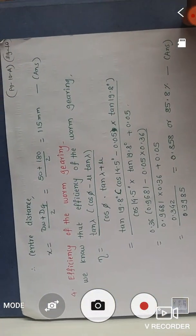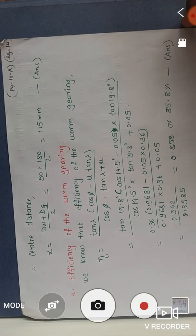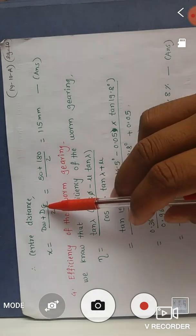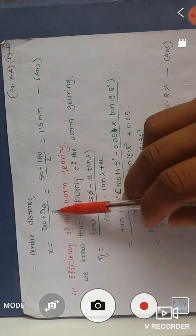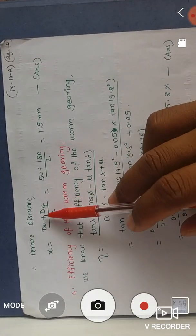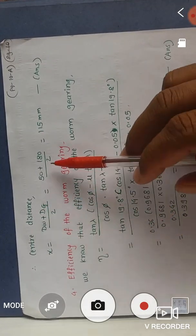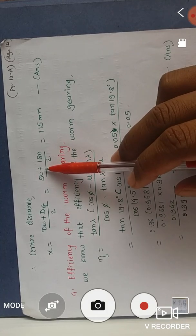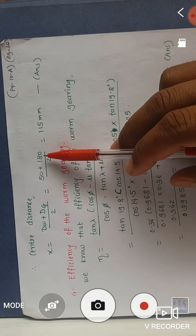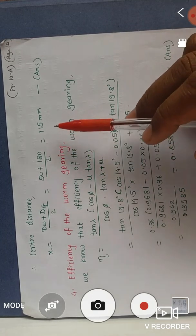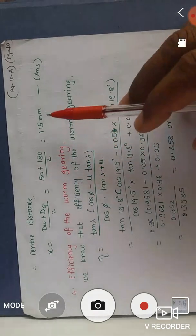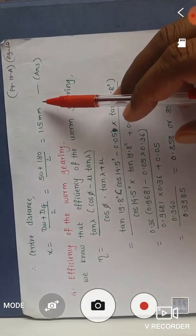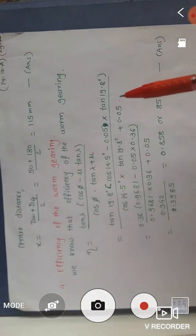The center distance x = (dw + dg) / 2 = (50 + 180) / 2 = 115 mm. This is our third answer.